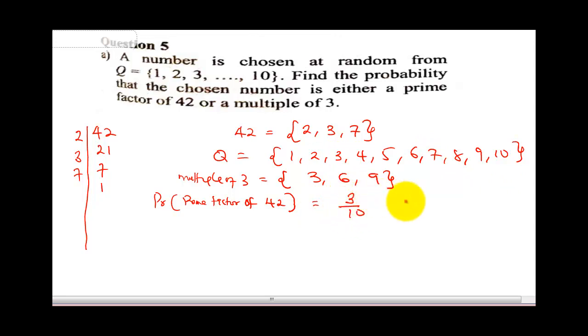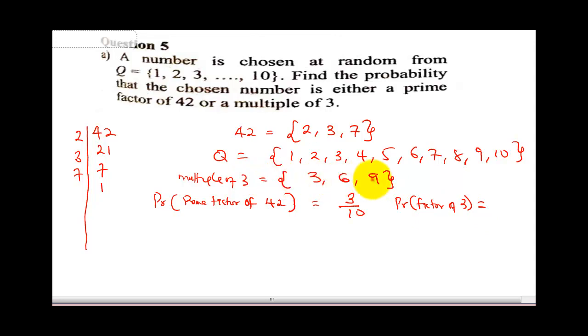The probability of getting multiples of 3 — we have 3, 6, and 9, which also appears 3 times, so it is still 3 over 10.